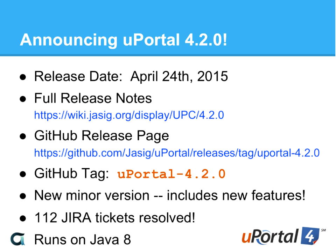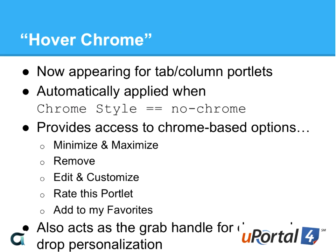I have a number of highlights from the 4.2.0 release — this is just a sample. There isn't enough time to cover everything cool that is new in 4.2, but here are some of the most notable. First: Hoverchrome. We actually had Hoverchrome in 4.1, but only for portlets that were in regions — for example, the logo portlet would have Hoverchrome if you're the admin user, allowing access to config mode.